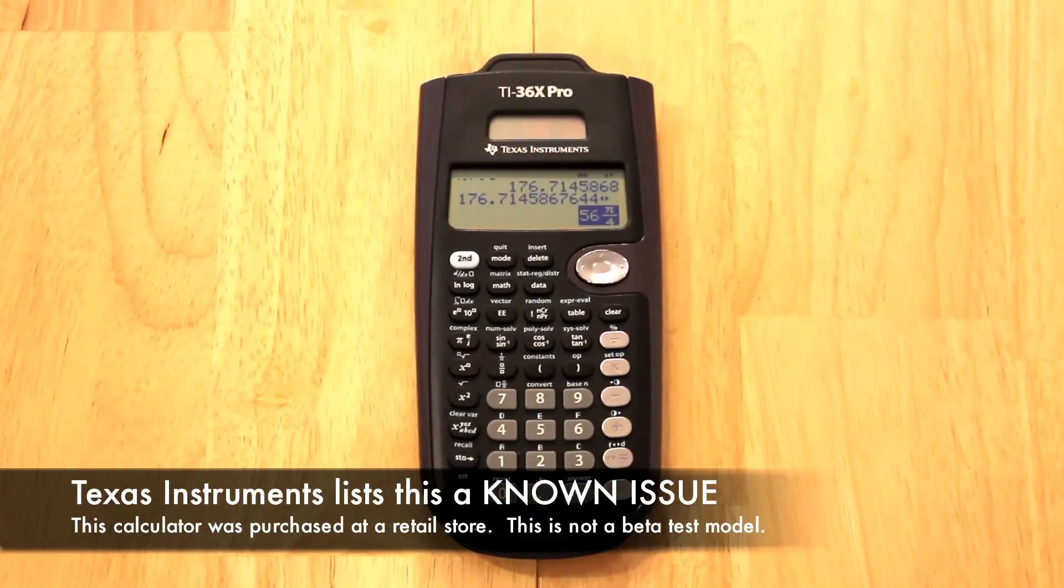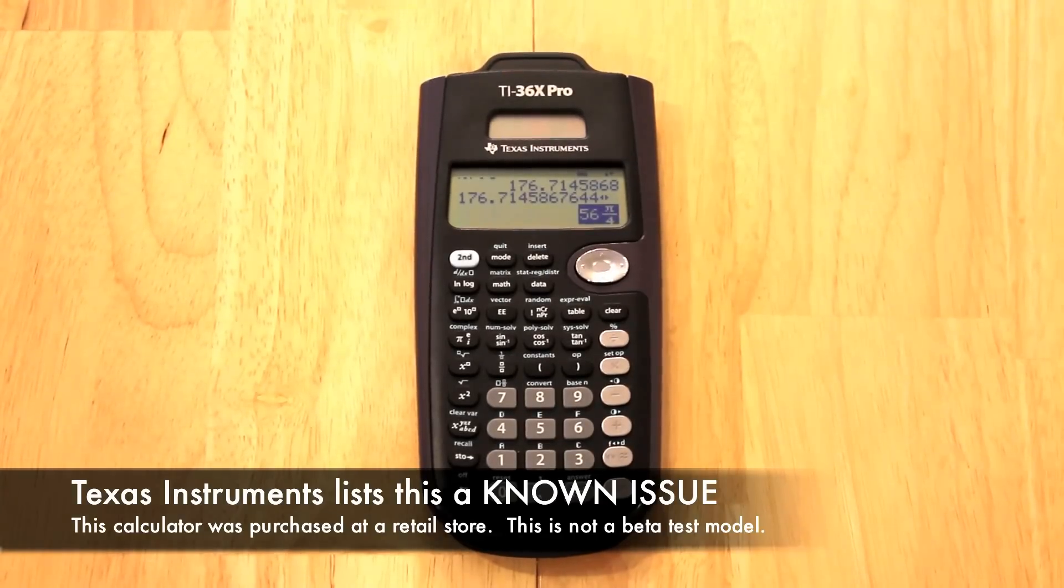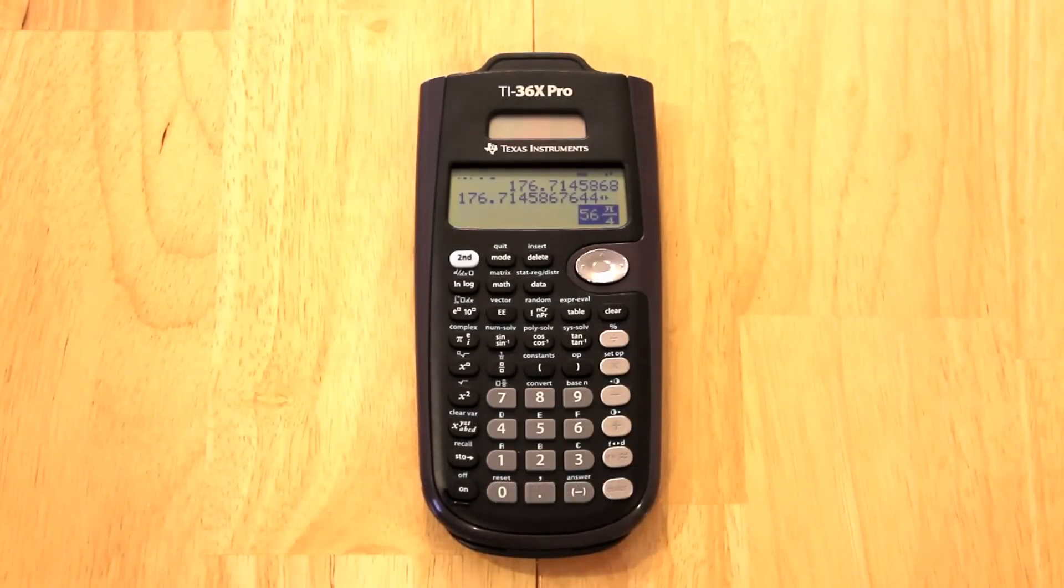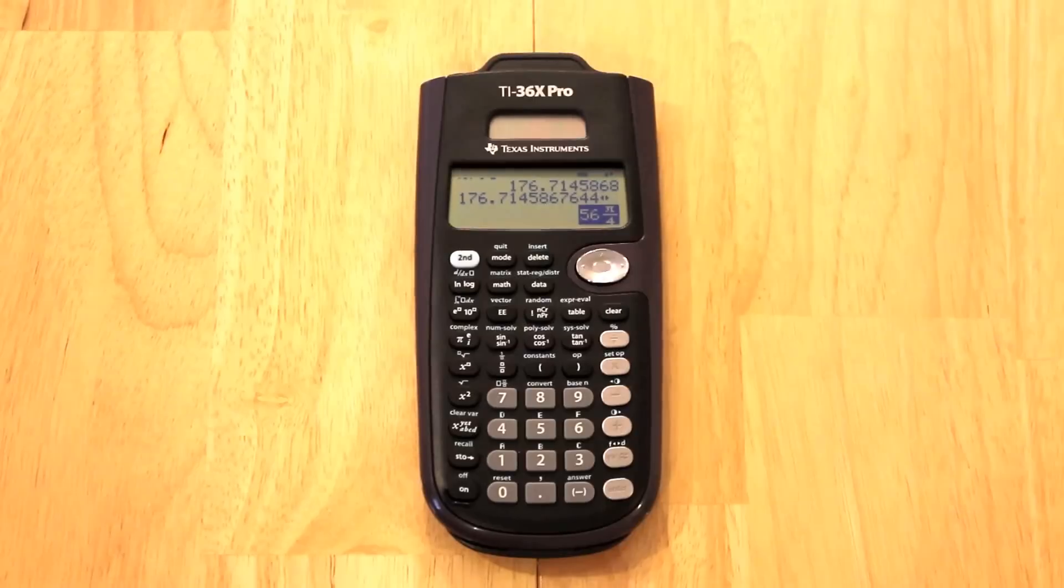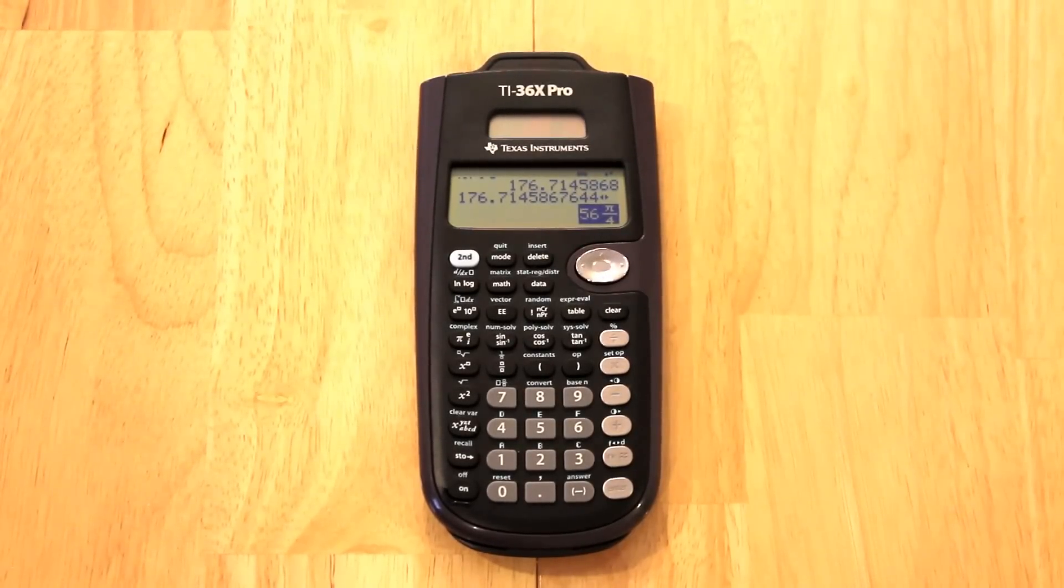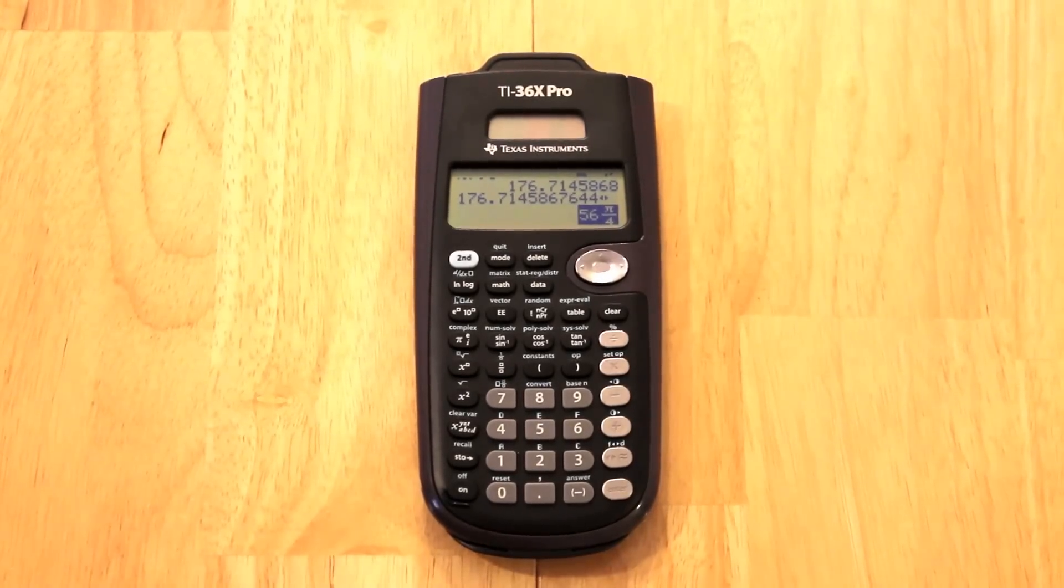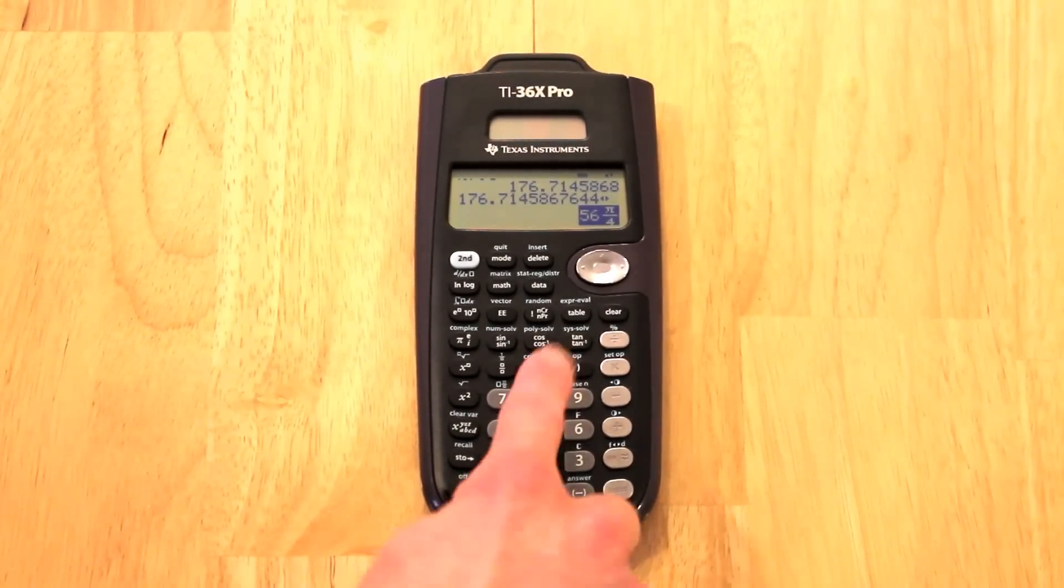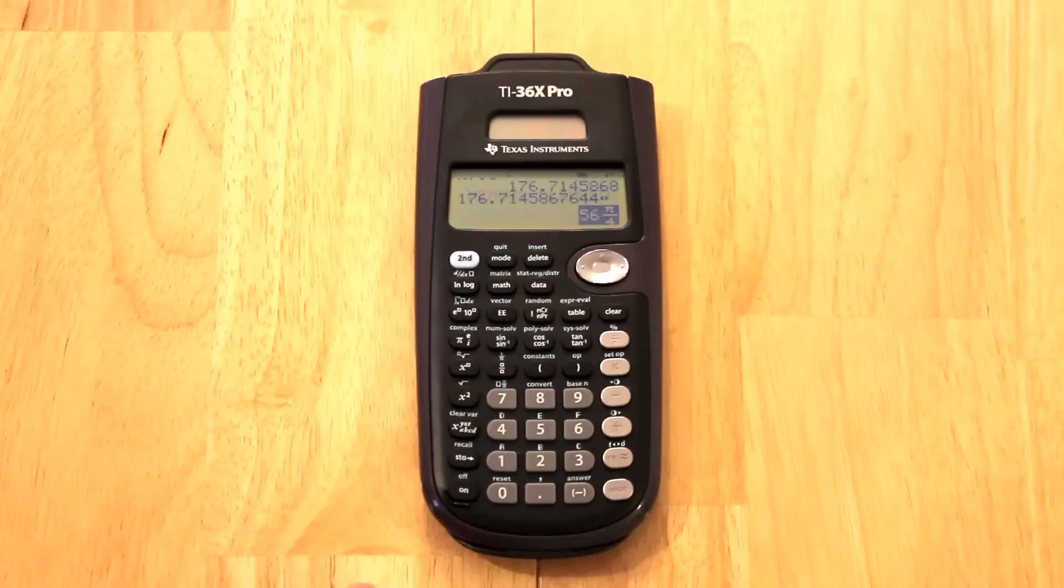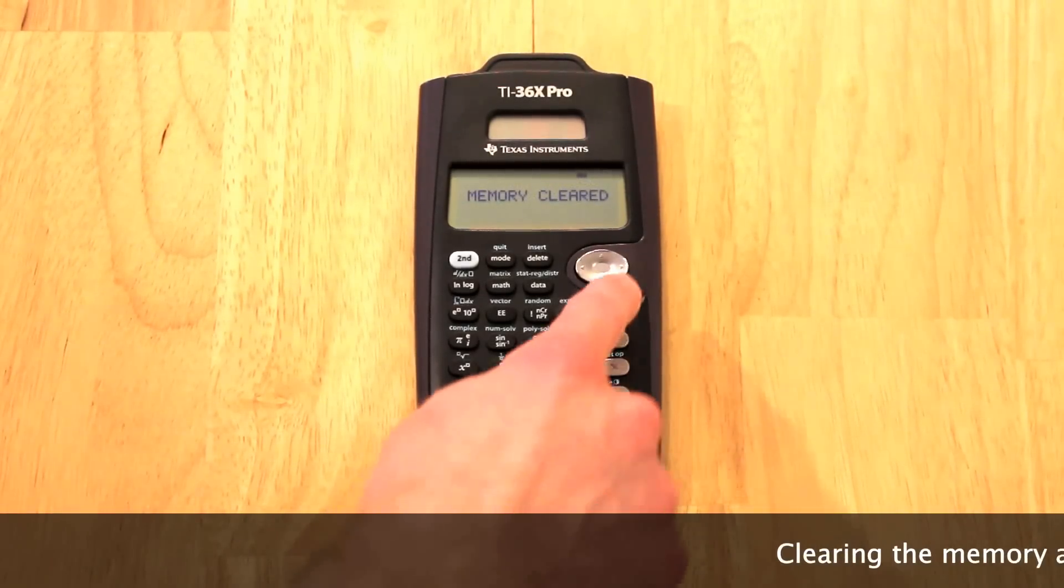Now, this issue is listed on Texas Instruments' website as part of their knowledge database for this calculator as a known error. And their solution to it is to clear the memory in the calculator. Which, this is great for clearing the problem once it happens, but it does not really prevent the problem from happening in the first place. For example, if I clear the memory, I hit on and clear at the same time. And it'll say memory cleared. And so I'll clear that out.